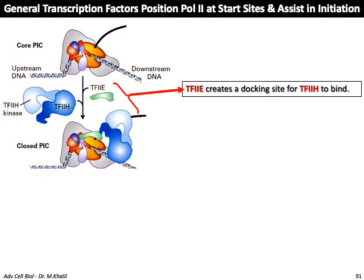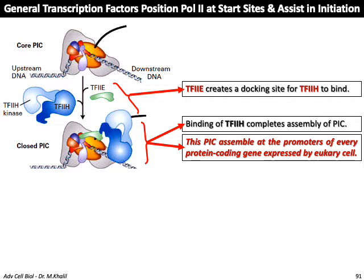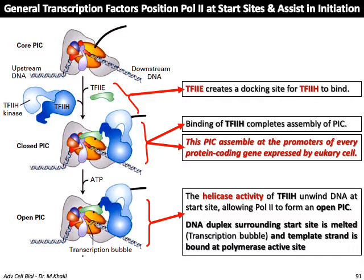The binding of some transcription factor 2 components enables polymerase to continue. Transcription factor TF2E creates a docking site for TF2H to bind, and this is followed by the binding of TF2H to complete the assembly of the PIC, now called the closed PIC or closed pre-initiation complex. This PIC assembles at the promoters of every protein-coding gene expressed by eukaryotic cells. The helicase activity of TF2H then unwinds the DNA at the start site, allowing polymerase II to form an open PIC.